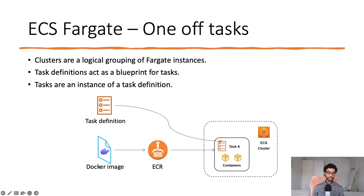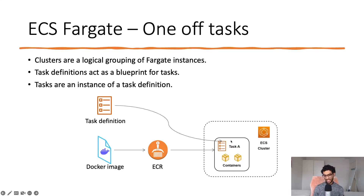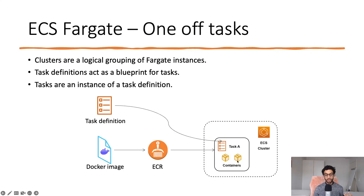So you have your Docker image, and you would upload this to Elastic Container Registry, or ECR. This is like a cloud storage for Docker images — you can think of it as GitHub or Google Drive for Docker images on AWS. This Docker image runs as containers in something called a task. A task is just like a server instance, although abstracted away from you. The task runs in an ECS cluster, which is simply a logical grouping of tasks — you can have multiple tasks in a cluster. You also have something called a task definition, which is a blueprint for tasks. This is where you define the amount of CPUs, the RAM you need, the ports that need to be opened, and all that.